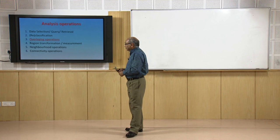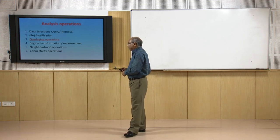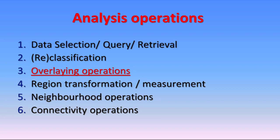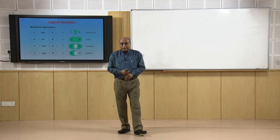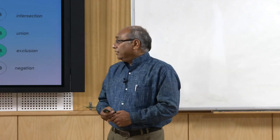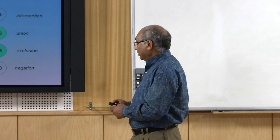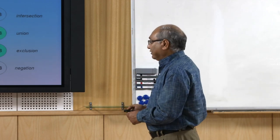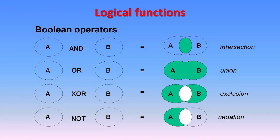We are focusing on overlay operations, and in the later part we will also discuss regional transformation and measurement. Let us start with overlaying operations. As you know, we have gone through the mathematics based on set theory and Boolean logic - also called Venn diagrams - where we know A intersection B, A union B, A exclusion B, and A negation B: these are the different scenarios.